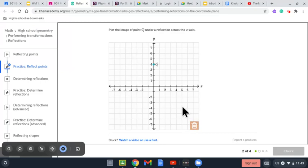So we have to plot the image of point Q under a reflection across the x-axis. Which means that we have to do a reflection for the Q.